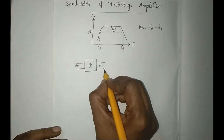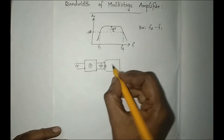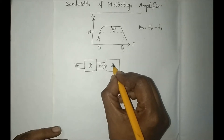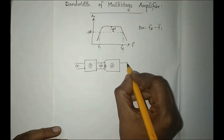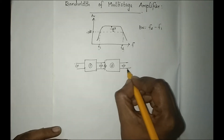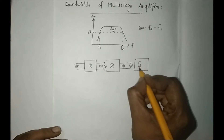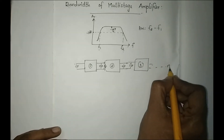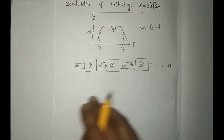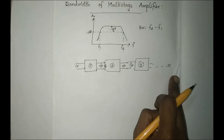The output of the first transistor is given to the input of the second transistor. The output of the second transistor is given to the input of the third transistor. So this is how n number of stages — n number of transistors — can be connected in cascade.